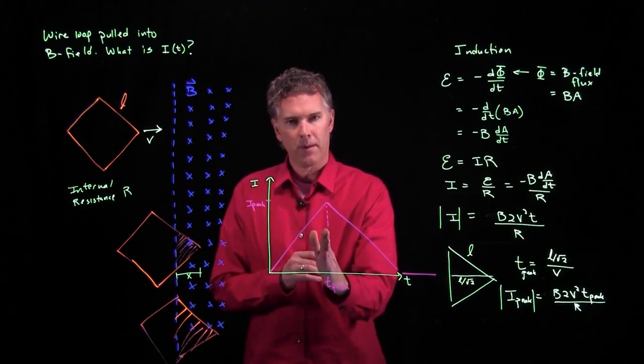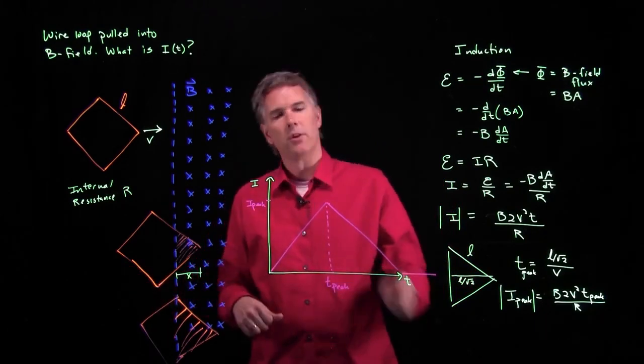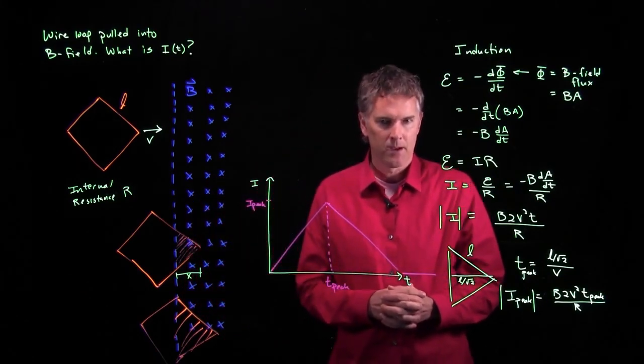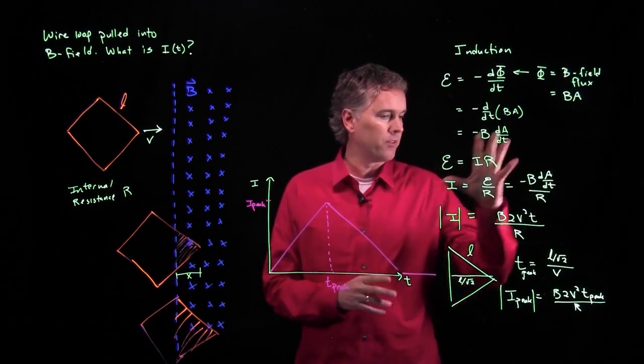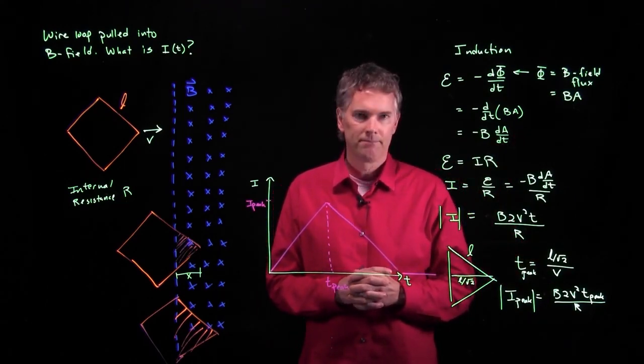You know it has to be symmetric about T peak because if you ran the whole thing in reverse it should go up and then down just like this behavior. Hopefully that's clear. You guys can plug in some numbers and try it out and see what you get. Cheers.